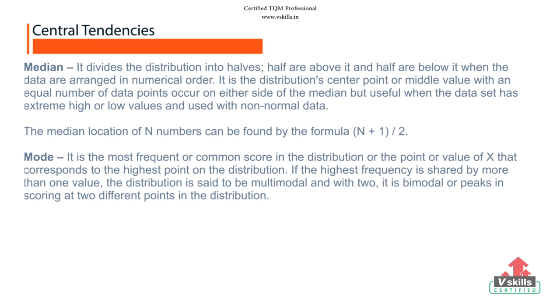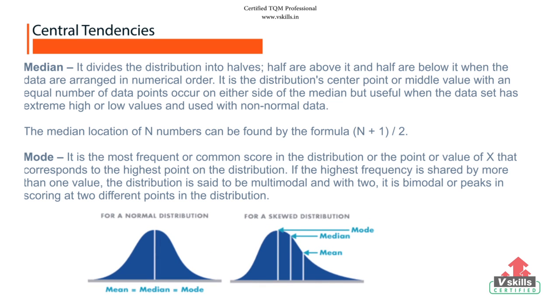Mode. It is the most frequent or common score in the distribution or the point or value of x that corresponds to the highest point on the distribution. If the highest frequency is shared by more than one value, the distribution is said to be multimodal and with 2, it is bimodal, or peaks in scoring at two different points in the distribution. The figure clearly shows that for a normal distribution, mean is equal to median and is equal to mode. For a skewed distribution, mean is smaller than median and median is smaller than mode.